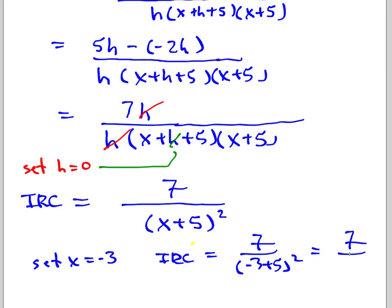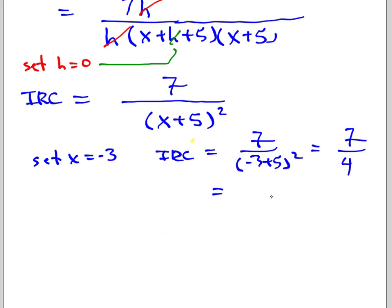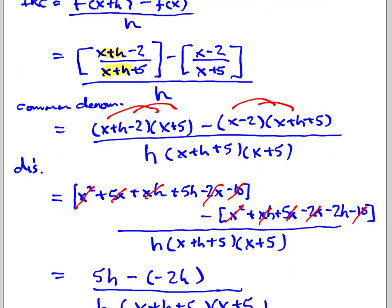And then if we do a quick little test, set x equal to negative 3, which is the previous question we just did. Then your IRC becomes 7 over negative 3 plus 5 all squared, which is going to be 7 divided by 4, which is going to be 1.75. And if you compare 1.75 to this answer we got here, 1.84, they're very close. The reason they're not the same is that the 0.1 interval isn't quite small enough to get us to this value of 1.75.